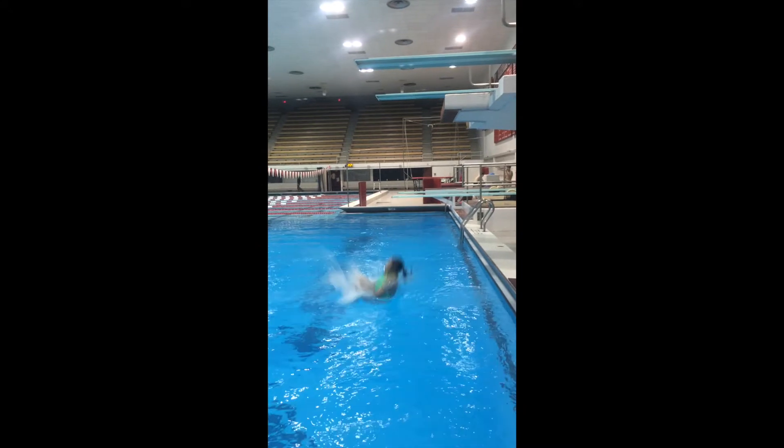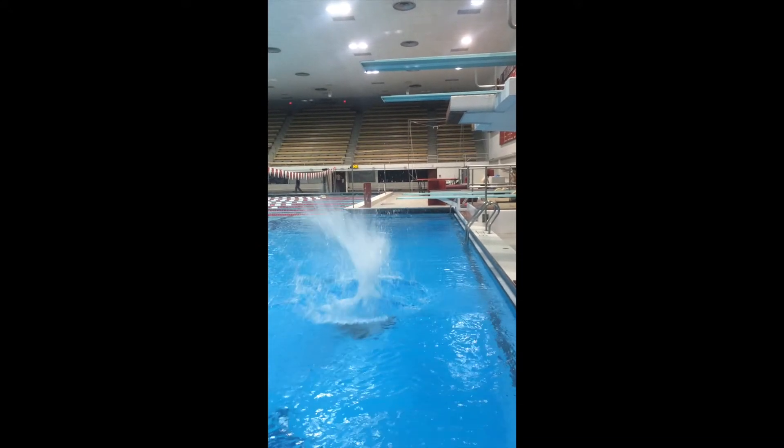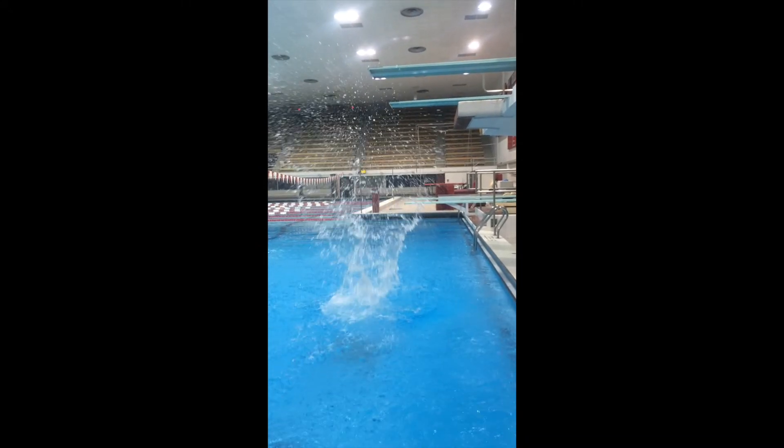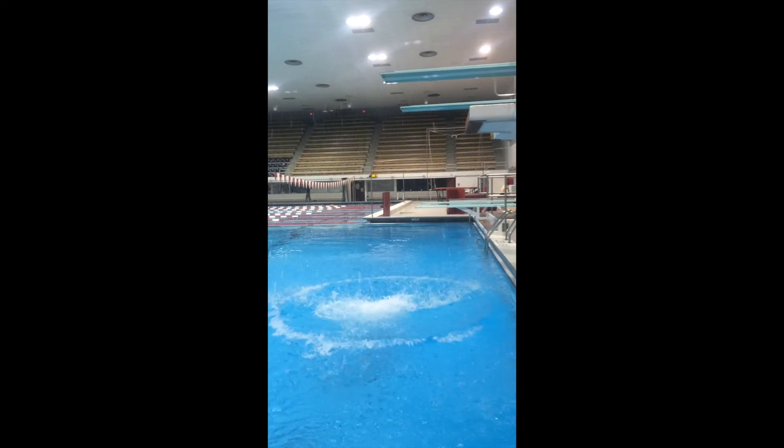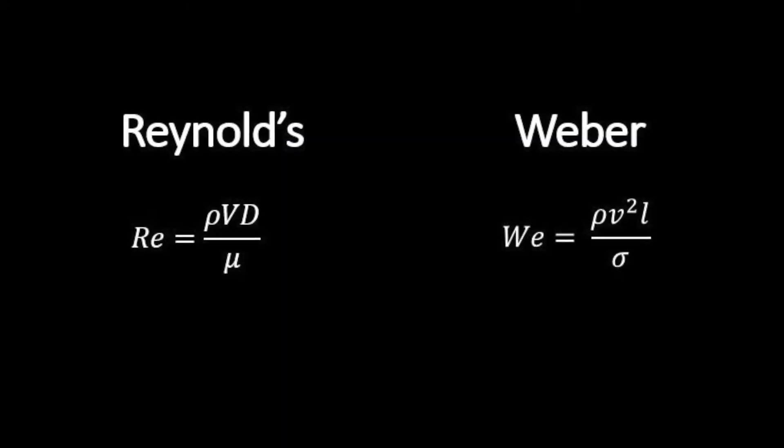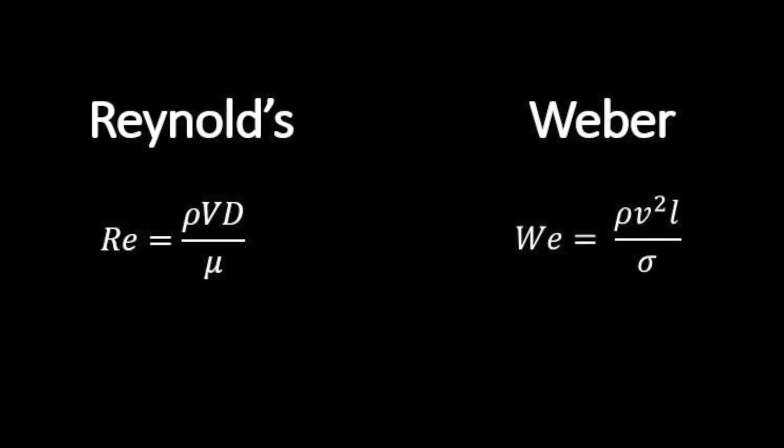When an object hits the surface, water is displaced upwards and outwards. The splash contours to the shape of the falling object, ejecting water at 20 to 30 times the impact speed, forming droplet patterns governed by the Reynolds and Weber numbers.